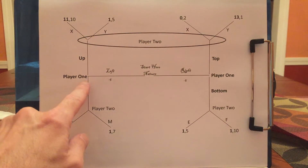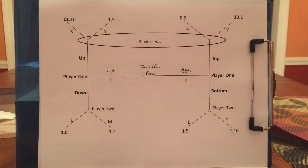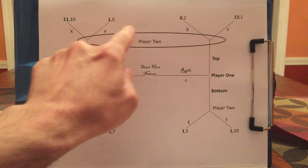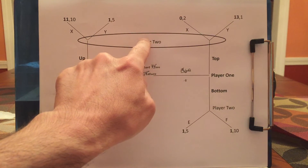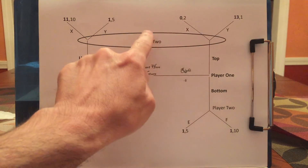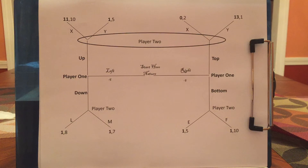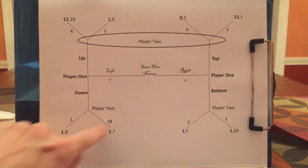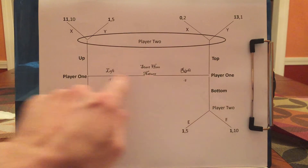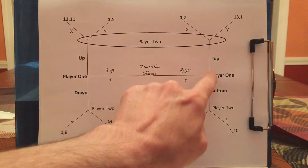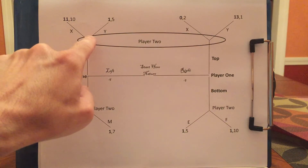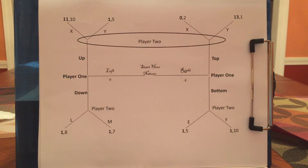Things get interesting if player 1 picks up if he's a lefty or picks top if he's a righty. Now player 2 will face some uncertainty. Player 2 will know that he's up here — he knows that player 1 either picked up or top, as opposed to down or bottom — but he won't know if he is on the left or the right. A way to look at this game is to say that player 1 has two types: lefty or righty. Nature picks what type player 1 is. Player 1 is aware of his type, but player 2 does not always become aware of player 1's type.